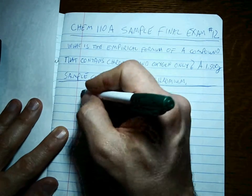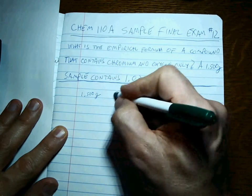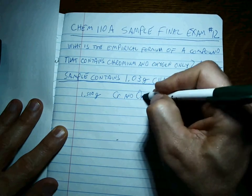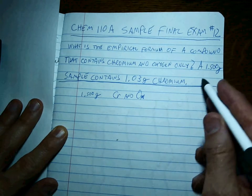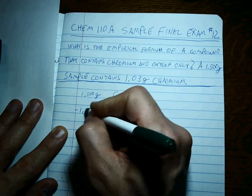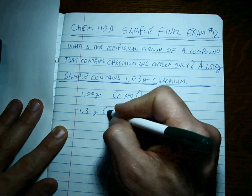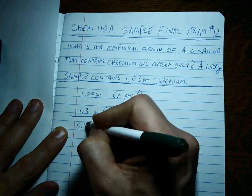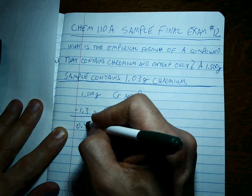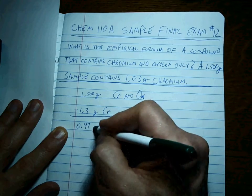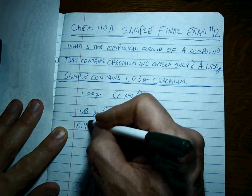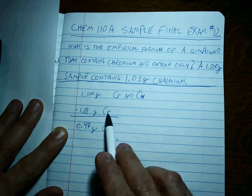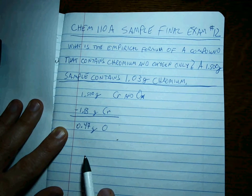Not too bad. If we know that 1.500 grams contains chromium and oxygen — chromium is Cr and oxygen is O — and we also know that 1.03 grams is chromium, therefore the difference between those, 0.47 grams, is oxygen. If 1.03 grams is chromium, the rest has to be oxygen to get 1.5 grams.